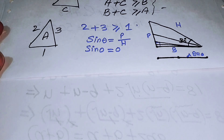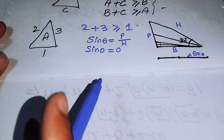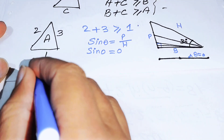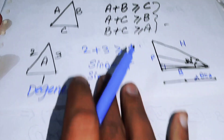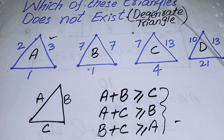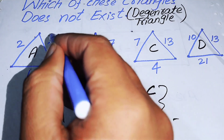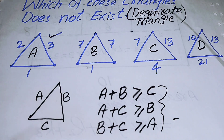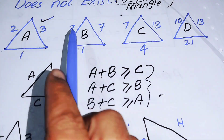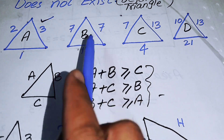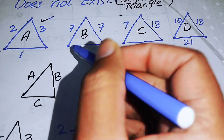In a degenerate triangle, all three vertices lie on a straight line. Triangle A, with sides 2, 3, and 1, is a degenerate triangle — 2 + 1 = 3, which equals the third side, so they are collinear. Triangle B has sides 7, 7, and 1: 7 + 7 = 14 > 1, 1 + 7 = 8 > 7, and 7 + 1 = 8 > 7, so triangle B is a valid triangle.